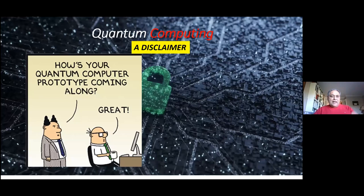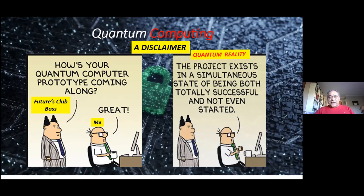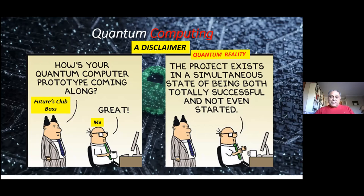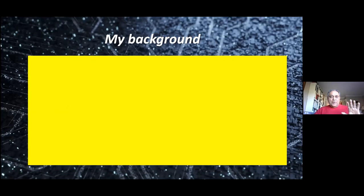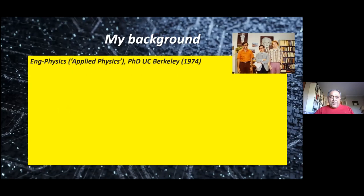So I was planning to solve the Schrodinger equation for a many body system, but I'm not sure this crowd is worth it. So I'm not going to do any solving any equations for you, but I'll do something else. I'll show you some cartoons. So here's the first thing that came to me. How is my computer prototype or presentation going on? The futurist boss is right there on the screen. That's me. I said, great. But then what happens? The reality strikes in and I realized that simultaneity is what finally is totally successful and not started at the same time. So that's a disclaimer.